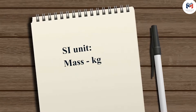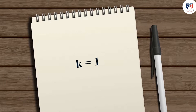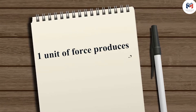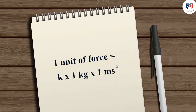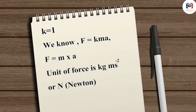The SI unit of mass is kilogram (kg) and acceleration is meter per second squared. The unit of force is chosen such that the constant of proportionality K becomes 1. We define 1 unit of force as the amount of force that produces an acceleration of 1 meter per second squared in an object of mass 1 kilogram. Thus, the value of K equals 1, and we can write force as F = M × A. The unit of force is kilogram meter per second squared, or Newton, represented by the symbol N.